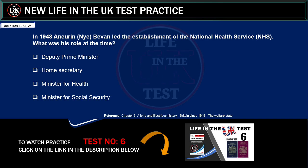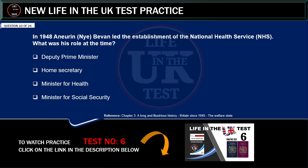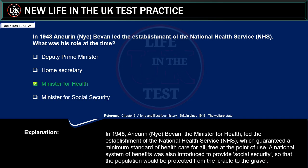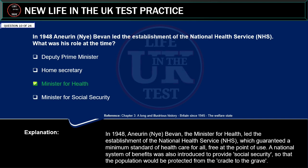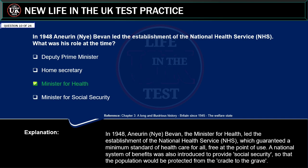In 1948, Aneurin Bevan led the establishment of the National Health Service (NHS). What was his role at the time? Deputy Prime Minister. Home Secretary. Minister for Health. Minister for Social Security. Correct answer: Minister for Health. Explanation: in 1948, Aneurin Bevan, the Minister for Health, led the establishment of the NHS, which guaranteed a minimum standard of health care for all, free at the point of use. A national system of benefits was also introduced to provide social security, so that the population would be protected from the cradle to the grave.